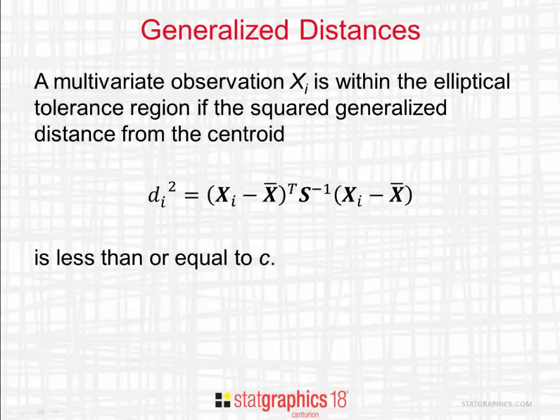There's one additional plot I want to show you based on something called the generalized distances. It turns out that a multivariate observation x sub i will be within the elliptical tolerance region if the squared generalized distance from the centroid, defined here as di squared, is less than or equal to c. These generalized distances are a good way of detecting unusual observations.